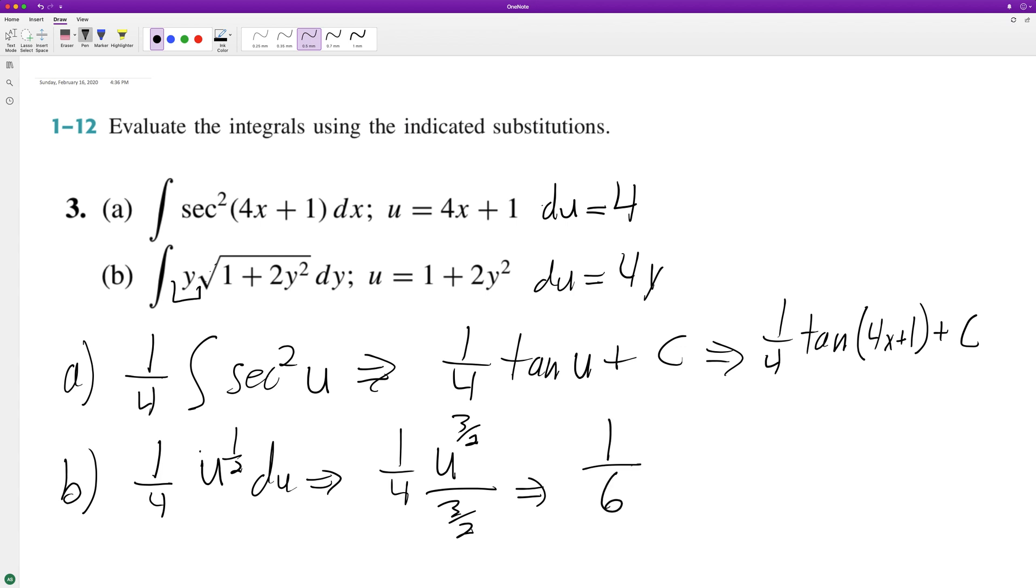We'll go ahead and substitute back in, so we end up with one plus two y squared raised to three halves plus c. That's it for part b.